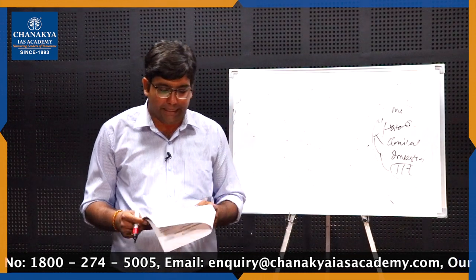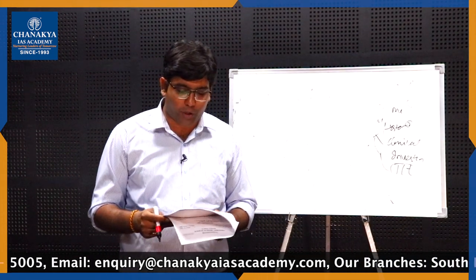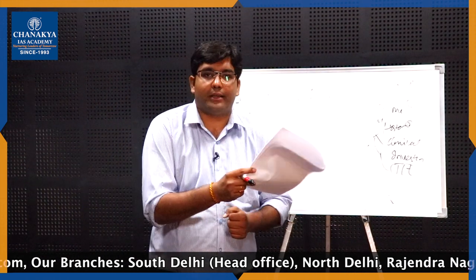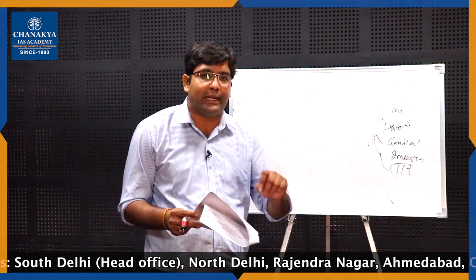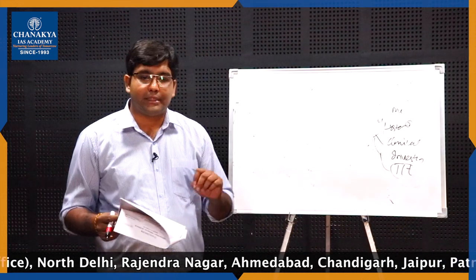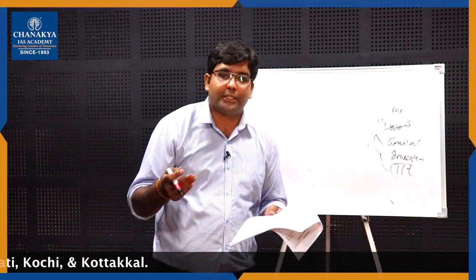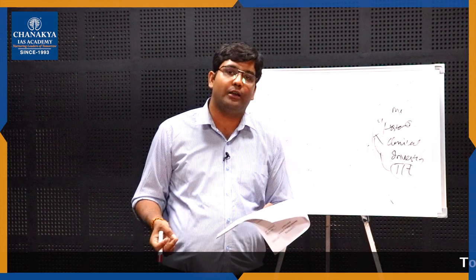Question 1B: A 10-month-old with tetralogy of Fallot brought to pediatric emergency with excessive crying, becoming dyspneic, drowsy, and cyanosed. What is the likely diagnosis? Don't just write the diagnosis directly — mention that based on the history of tetralogy of Fallot, crying, and dyspnea, I arrive at the diagnosis of a cyanotic spell, and then write the management.